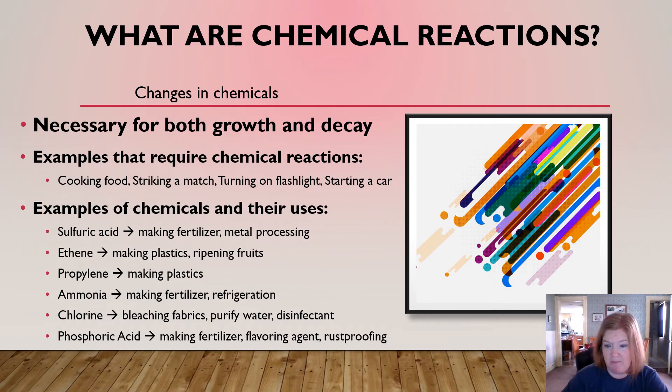Examples of chemicals that we use. So sulfuric acid, and a lot of these are given sort of a bad name, but it's used in making fertilizer and metal processing. Ethene, making plastics, ripening fruits. Propylene, making plastics. Ammonia, making fertilizer, also in refrigeration. Chlorine for bleaching fabrics, but also purifying water and a disinfectant. And phosphoric acid, making fertilizer, a flavoring agent, and rust proofing. So a wide assortment of things.